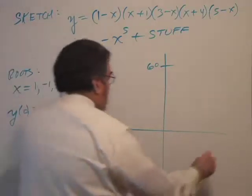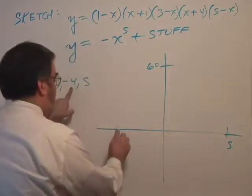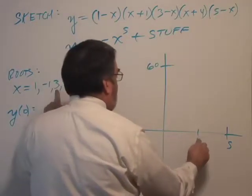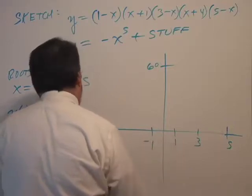So, we go out to 5. So, 5 is my farthest point on the x-axis. And negative 4, 3. And then 1 and minus 1.